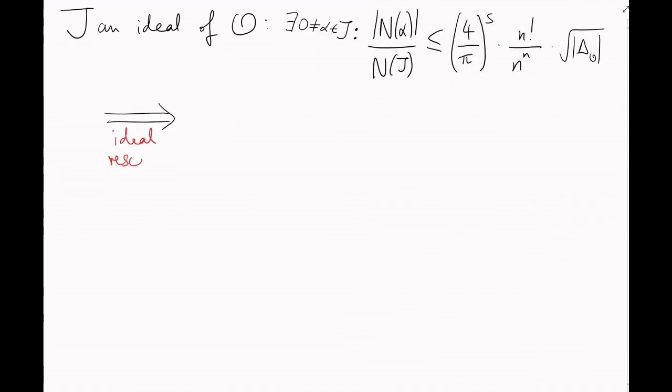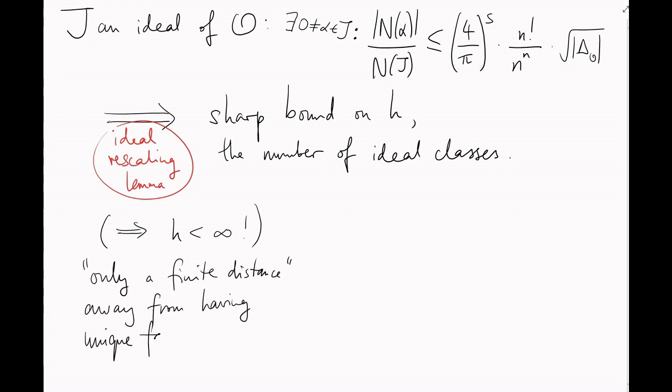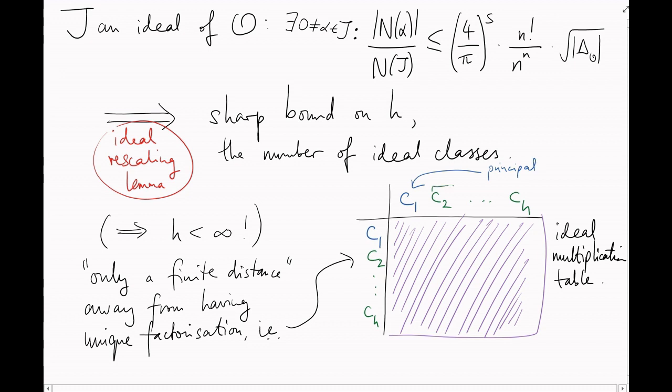Okay. Using the ideal rescaling lemma, as we have done a couple of times, this strange-looking bound gives us a very sharp bound on the number of ideal classes of O. In particular, the number of ideal classes is finite. So, even if O doesn't have unique factorization, it's somehow only a finite distance away from having unique factorization. We can draw a finite multiplication table for its non-principle ideal classes.